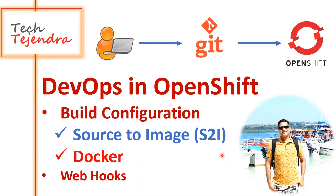Hello everyone, welcome to my channel Taxajendra. In this video we are going to talk about the implementation of DevOps in OpenShift. We will create a completely automated CI/CD pipeline in which, as soon as a user pushes code into the Git repository, a webhook between Git and OpenShift will initiate the OpenShift build. OpenShift will create a new image from your application code, which will be deployed automatically.